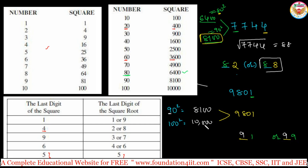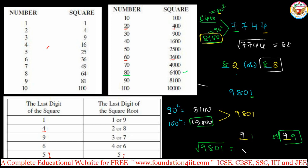9801 is closer to 10000 than to 8100, so it's close to the bigger number. When close to the bigger number, take the bigger value: 99 rather than 91. So the square root of 9801 is 99. Just two steps — instant calculation.